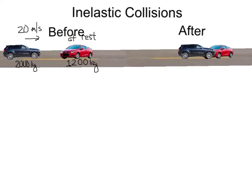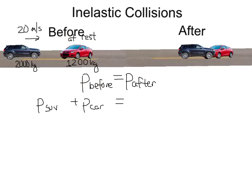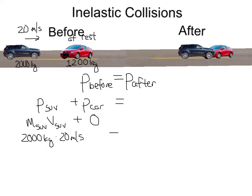What's the initial momentum before they collide? The momentum before will be the momentum of the SUV plus the momentum of the car. The car is at rest, so its momentum is zero. The momentum of the SUV is its mass times its velocity: 2,000 kilograms times 20 meters per second, giving a total initial momentum of 40,000 kilogram meters per second.